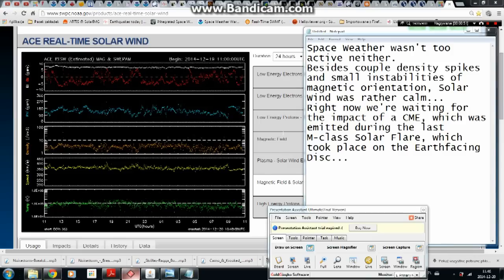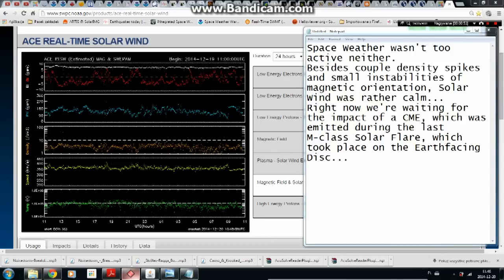Space weather wasn't too active neither. Besides couple density spikes and small instabilities of magnetic orientation, solar wind was rather calm. Right now we're waiting for the impact of a CME which was emitted during the last M-class solar flare which took place on the Earth-facing disk.